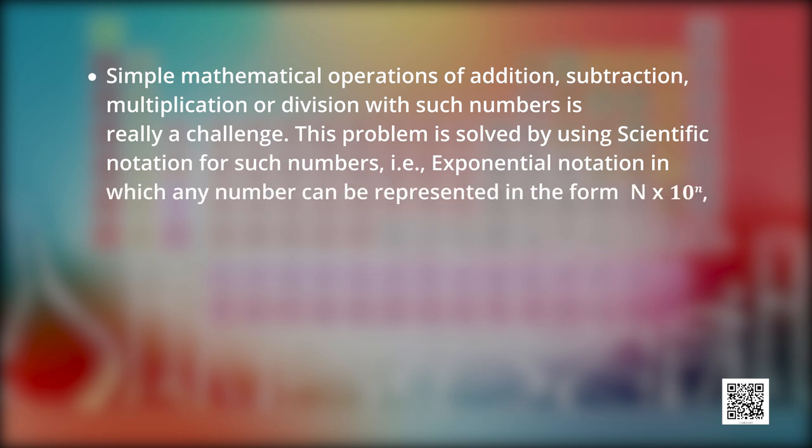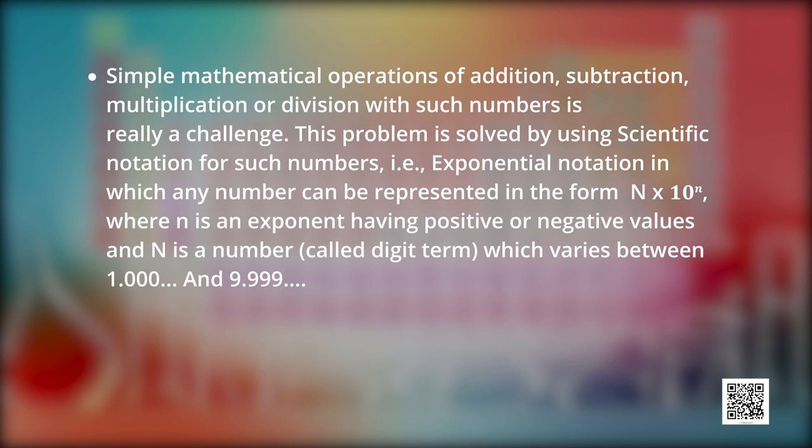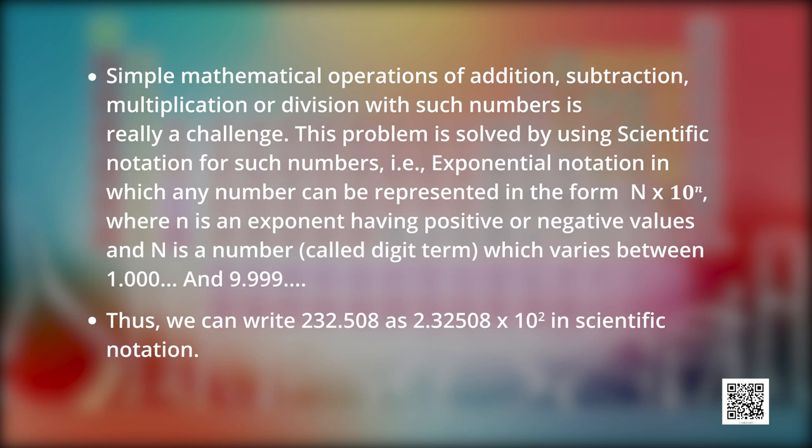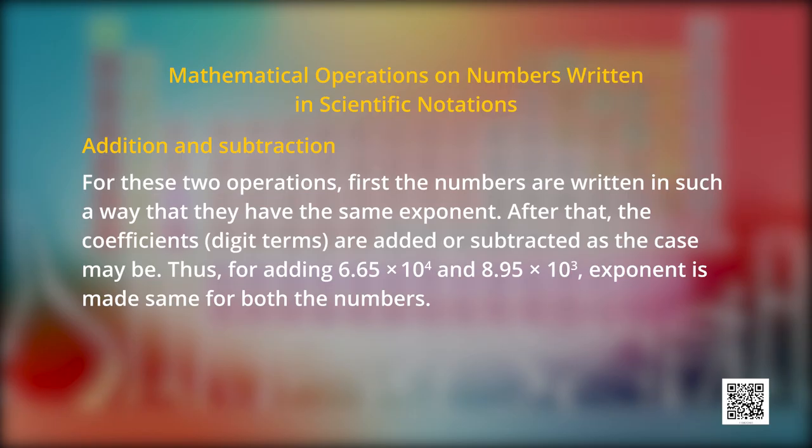In scientific notation, any number can be represented in the form of n into 10 raised to the power of n. On the screen, you can see how we can write scientific notation. Here, in n into 10 raised to the power of n, lowercase n is an exponent having positive or negative values, and uppercase N is a number called digit term which can vary between 1 and 10. For example, we can write 232.508 as 2.3258 into 10 raised to the power of 2 in scientific notation. Similarly, for writing 0.00016 in scientific notation, we will use 1.6 into 10 raised to the power of minus 4. Now, let's see how to perform mathematical operations on numbers written in scientific notation.